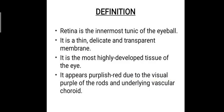The retina is the innermost tunic or layer of the eyeball, which is a very thin, delicate, and transparent membrane. It is the most highly developed tissue of the eye, which receives light impulses and converts them into nerve impulses — and that's how we see an image.